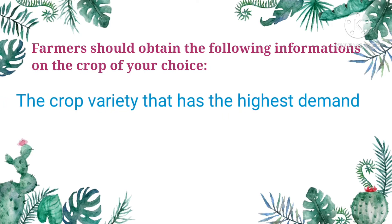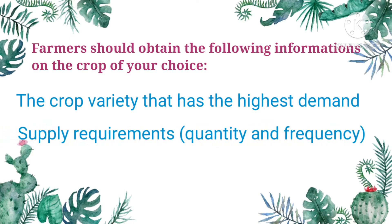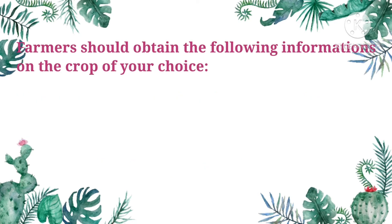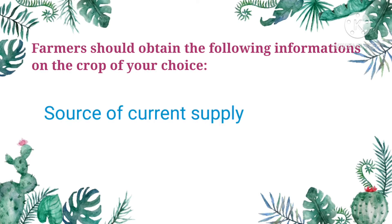Another is the crop variety that has the highest demand. An example is the Guimaras mango, which is said to be the sweetest and most delicious variety that buyers demand for. Next, supply requirements like quantities and frequency — meaning how much produce you are going to sell in the market. For example, the market demand is 100 kilos of banana with twice-a-week supply. For quality of market requirements, the crop produced should qualify to the market standard. The source of current supply: farmers should identify who is the dominating supplier in the market to be able to determine competitors.